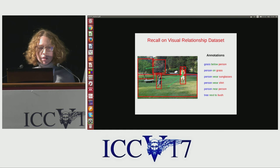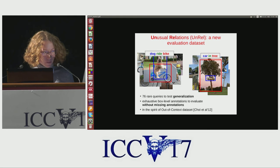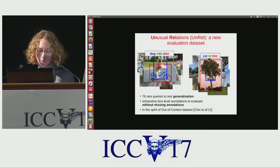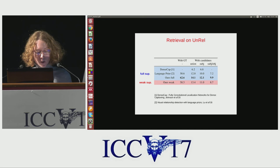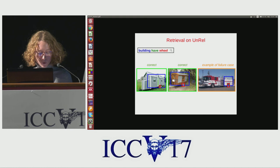This motivated us to introduce a new evaluation dataset called Unreal, made of unusual relations such as 'dog ride bike' or 'car entry.' Because these relations are rare in images, we can exhaustively label them, reducing the noise due to missing annotations. Evaluating on unusual relations from Unreal also enables testing generalization, since these triplets are rare at training. We evaluated our model for retrieval on unusual relations on Unreal and showed improvements compared to two fully supervised baselines.